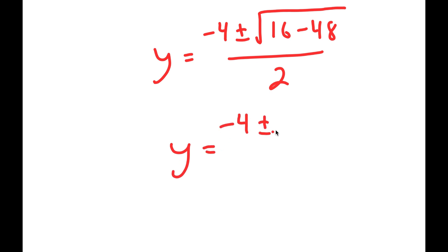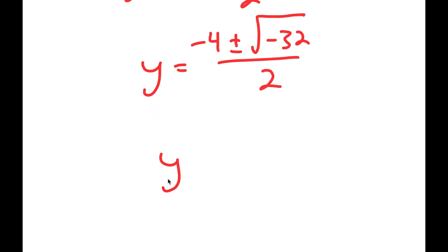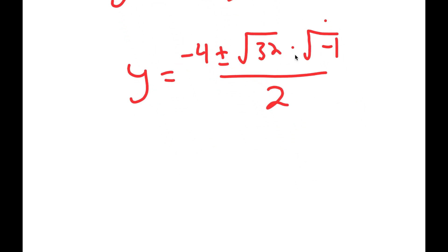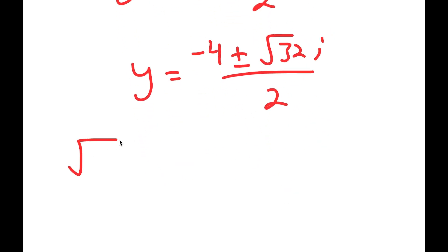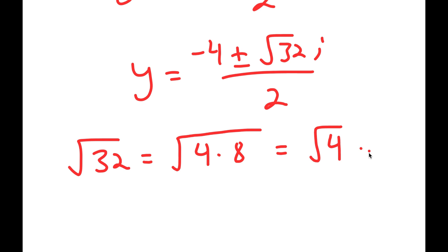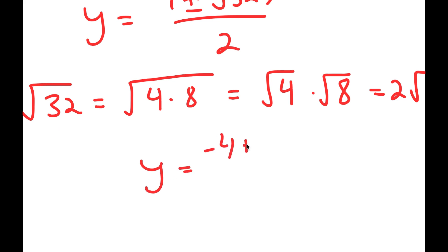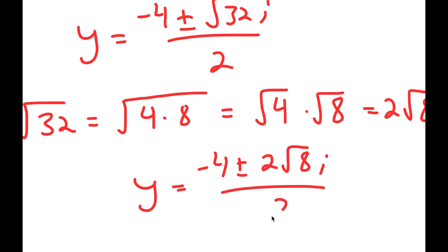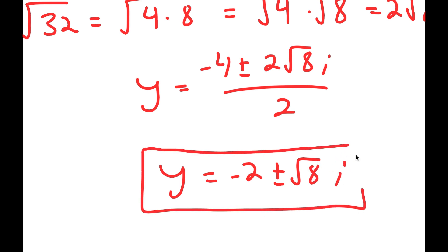This equals negative 4 plus or minus the square root of negative 32 over 2. The square root of negative 32 I can rewrite as the square root of 32 times the square root of negative 1. The square root of negative 1 is equal to i, the imaginary number. So I get negative 4 plus or minus the square root of 32 i over 2. The square root of 32 is the square root of 4 times 8, which equals 2 root 8. So y equals negative 4 plus or minus 2 root 8 i over 2, which equals negative 2 plus or minus root 8 i. So these are another two solutions of y.